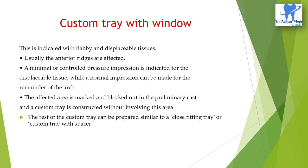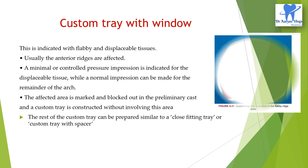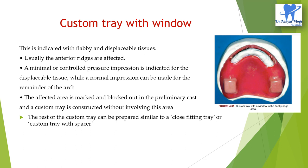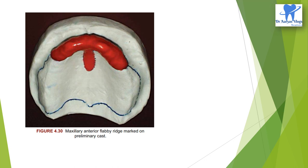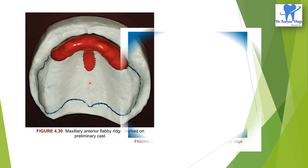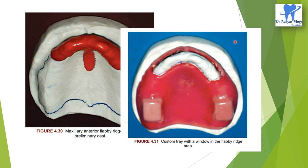The custom tray with window is indicated for flabby and displaceable tissue. Usually the anterior ridges are affected, and minimal or controlled pressure impression is indicated for the displaceable tissue while a normal impression can be made for the remainder of the arch. This is another example of a selective pressure impression. The affected area is marked and blocked out in the preliminary cast and the custom tray is constructed without involving this area. The rest of the custom tray can be prepared similar to a close-fitting tray or custom tray with spacer.